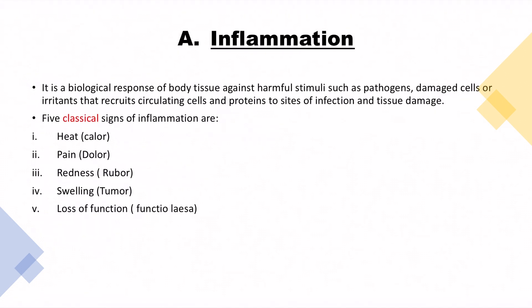Inflammation is a biological response of body tissue against harmful stimuli like pathogens or damaged cells, intended to recruit circulating cells and proteins to the site of infection and tissue damage. The five classical signs of inflammation are: heat (calor), pain (dolor), redness (rubor), swelling (tumor), and loss of function (functio laesa).